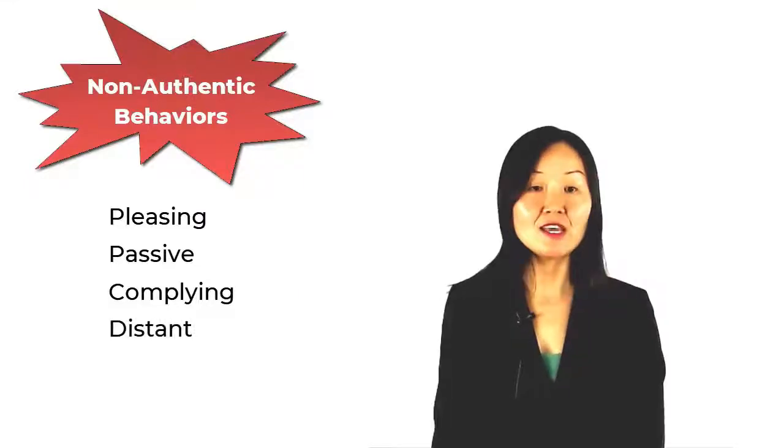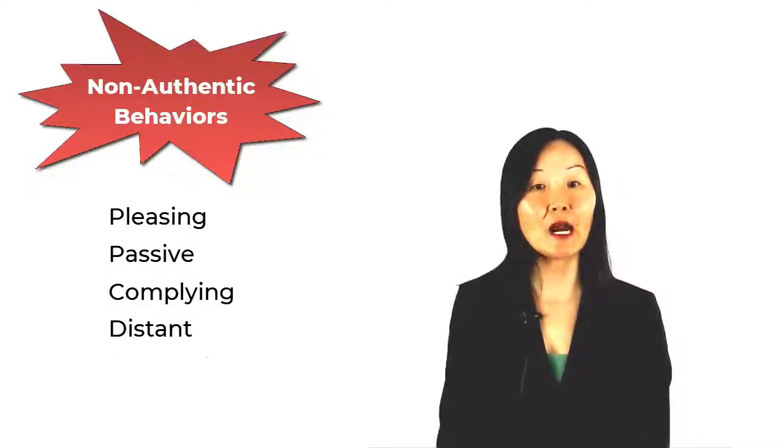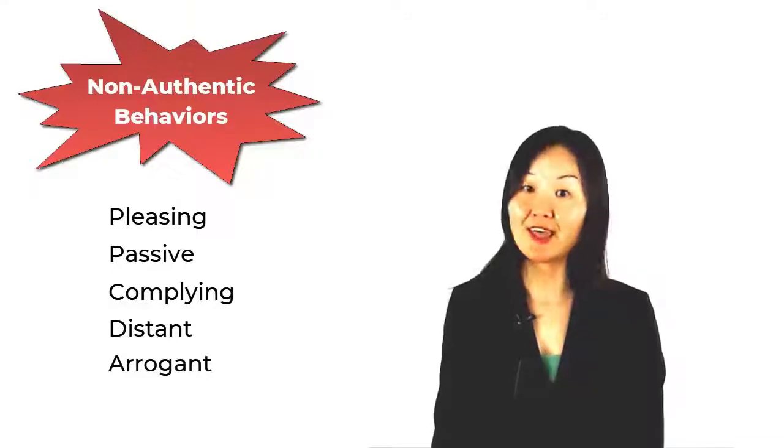Distant: he stays away from people to project intellectual superiority, which is a way of self-protection. And arrogant: he projects superiority to others to again protect himself.